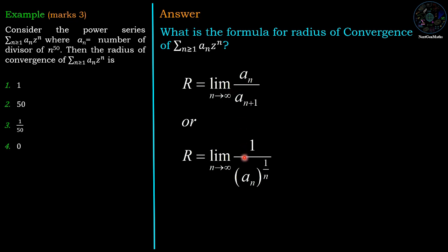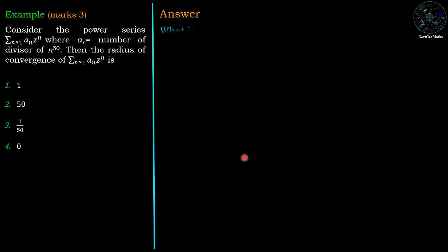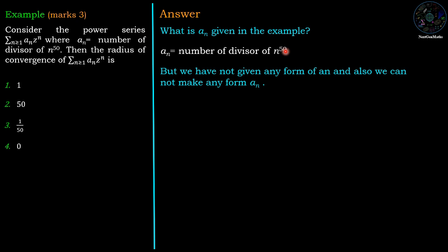Now, in both the series we require a_n. Now what is a_n for the given example? It is number of divisors of n^50 but we don't have any particular form of a_n. Then, what we can do, we just think about the a_n.